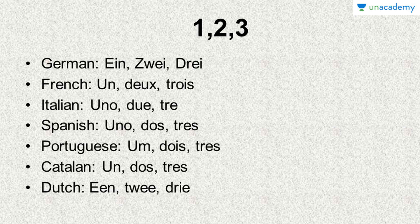I have grouped the numbers in sets of 3 or 4. So 1, 2, 3 in German is ein, zwei and drei. If you have followed my previous lesson on German, I explained that when E and I come together with E first and then I, it sounds like 'I'. So in German: ein is one, zwei is two and drei is three.